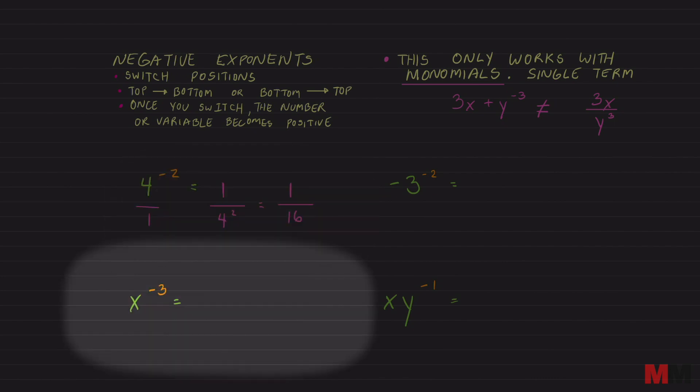How about if it's a variable? Same thing. This is technically on the top, so just have that imaginary 1 there. And all you gotta do is move that x to negative 3, slide it to the bottom, switch it from top to bottom. And once you switch its positions, you lose the negative exponent. That will equal 1 over x to the third.